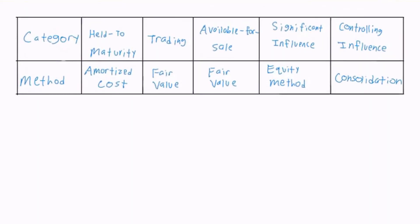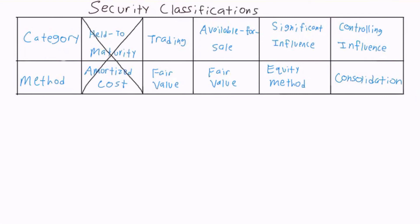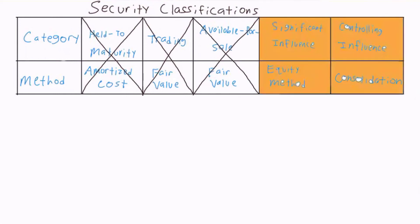In the previous two videos, we discussed three of the five security classification categories, including held to maturity securities, trading securities, and available for sale securities. In this video, we will discuss the accounting related to securities when a company has either significant or controlling influence.